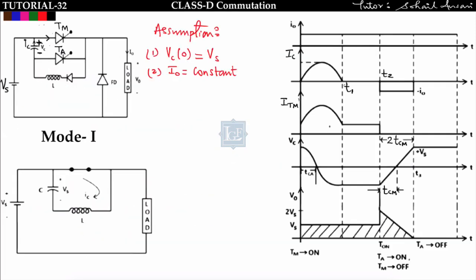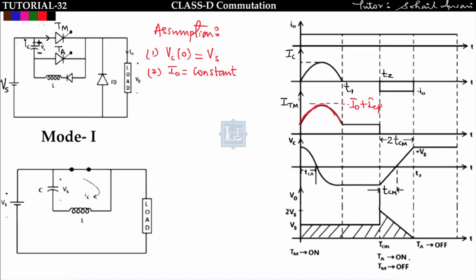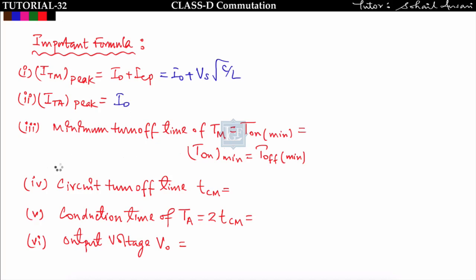Now for the key formulas. First, the peak current in the main thyristor: ITM_peak = I₀ + ICP = I₀ + Vs·√(C/L). Second, the peak current in the auxiliary thyristor ITAP: when TA is triggered, TM is off, so the auxiliary thyristor carries only the load current. Therefore ITAP = I₀.